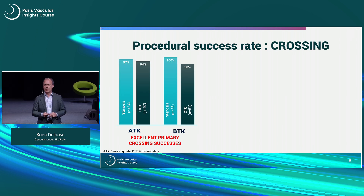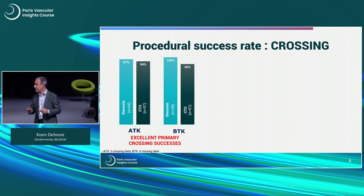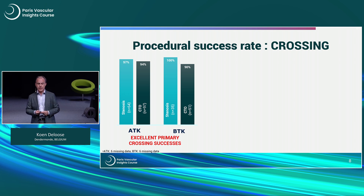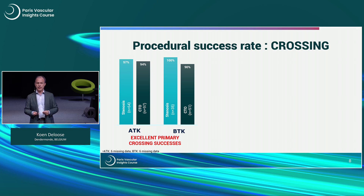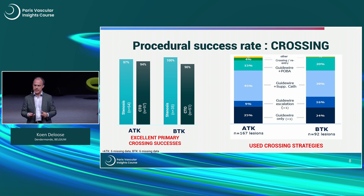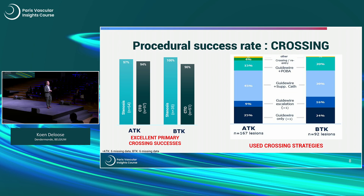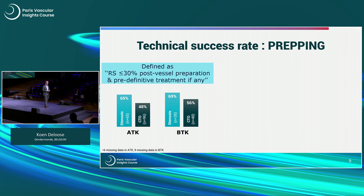If we pull this out and look at crossing alone, you can see that for stenosis it is extremely high. We are also doing a great job as interventionalists in passing chronic total occlusions, slightly better above the knee than below the knee. The devices used were primarily guidewires with escalation strategies and supporting catheters.